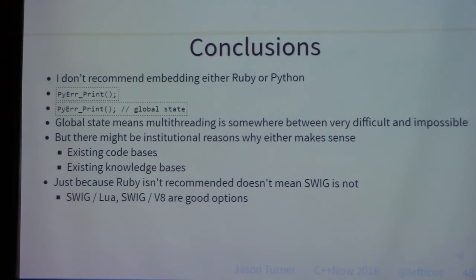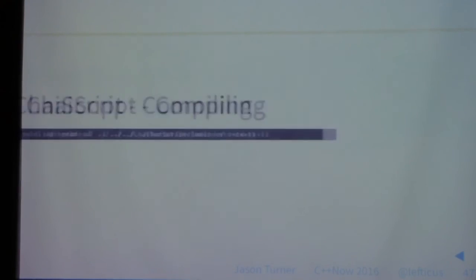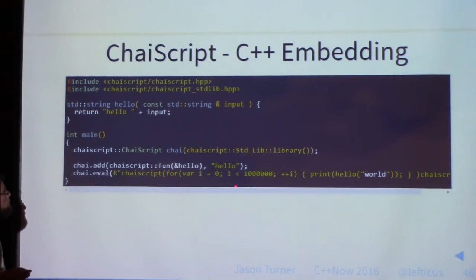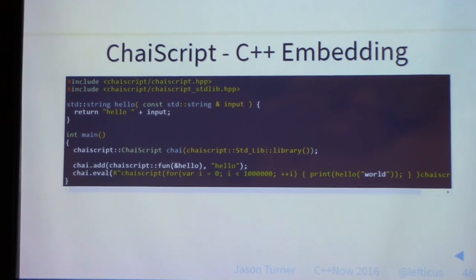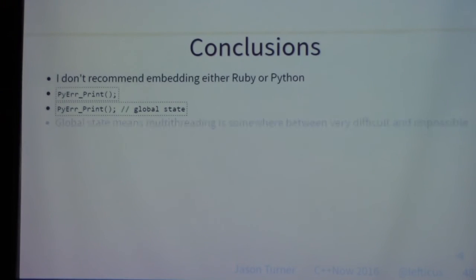Performance results: Sol2 was the fastest at approximately 4 million callbacks per second. Python and Ruby were tied at approximately 2 million callbacks per second. ChaiScript came in at about 1 million callbacks per second, with my current development branch closer to 1.25 million. I'm working on improving it.